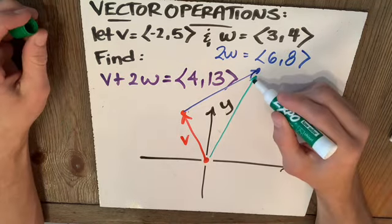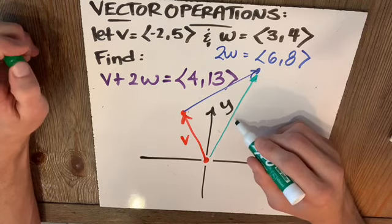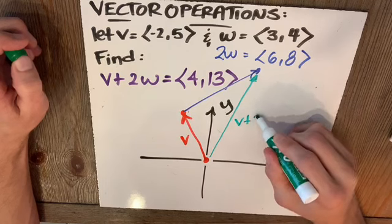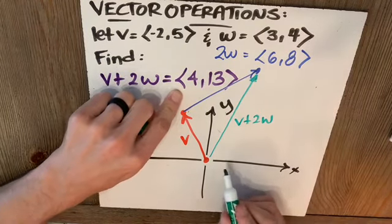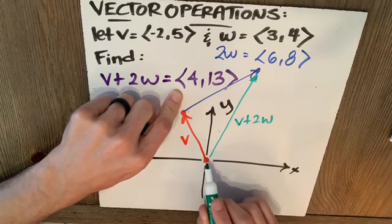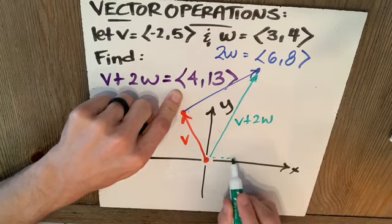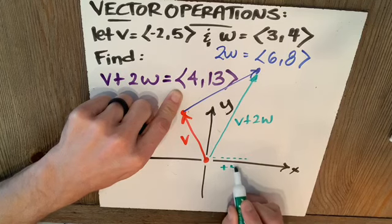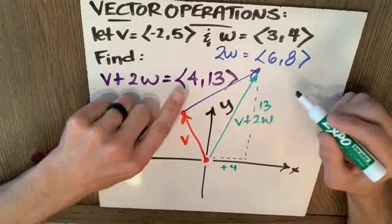Or it doesn't have to be our second vector. We could add multiple vectors together, our last vector. So our resultant vector is V plus 2W. You can see, what does this 4, 13 mean? It's the directions from the first point here to the last point there. So they're saying go over plus 4 and up 13.